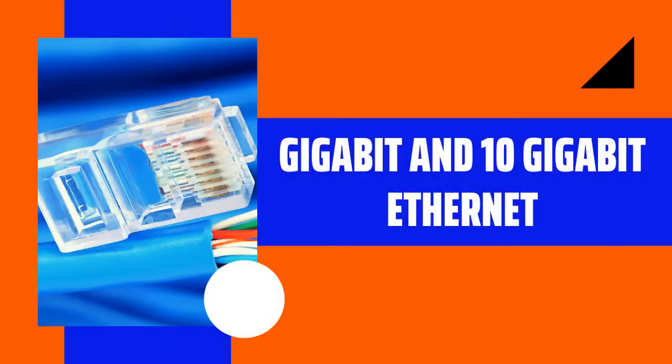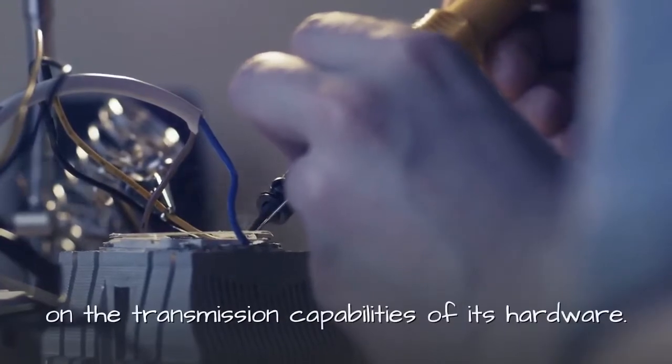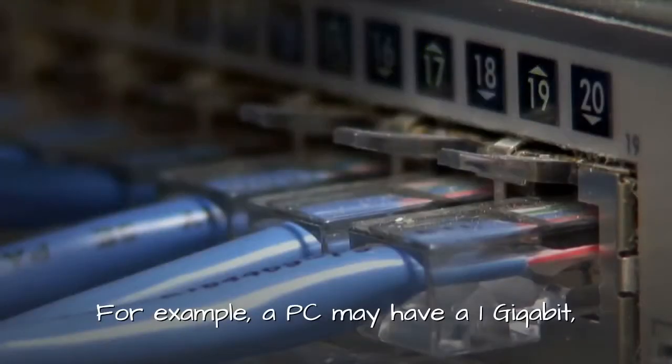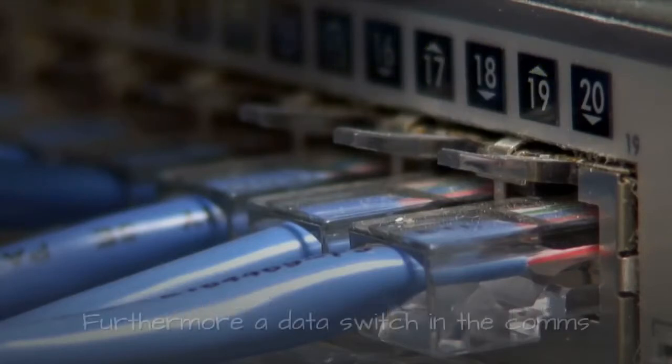Gigabit and 10 Gigabit Ethernet. A large portion of technology will be built based on the transmission capabilities of its hardware. For example, a PC may have a 1 Gigabit or 10 Gigabit Ethernet card built in.